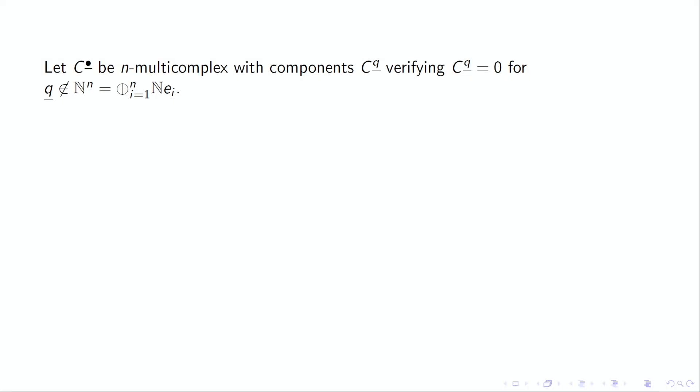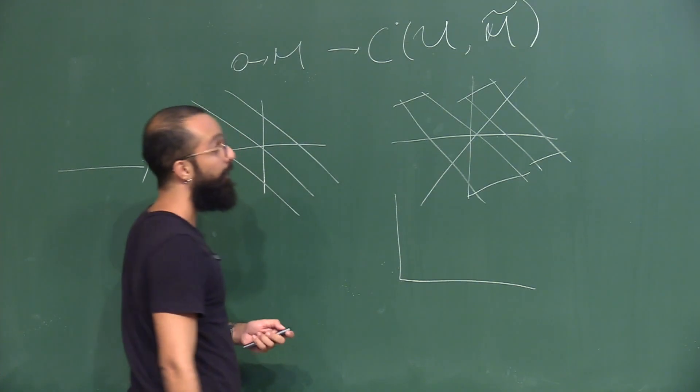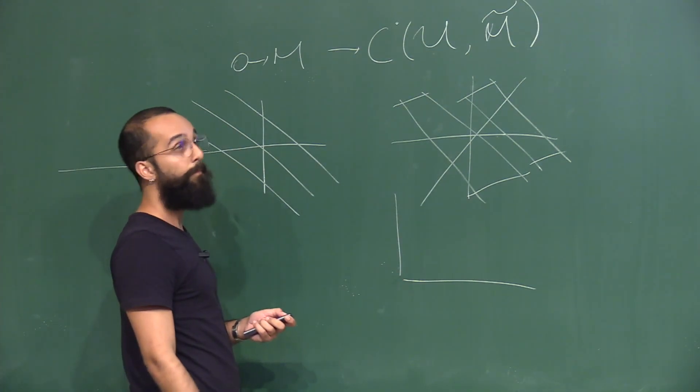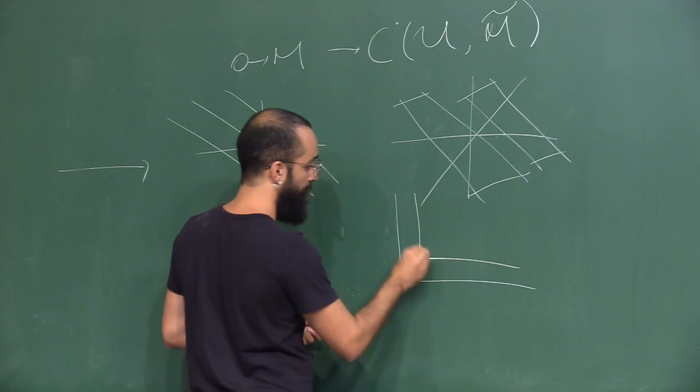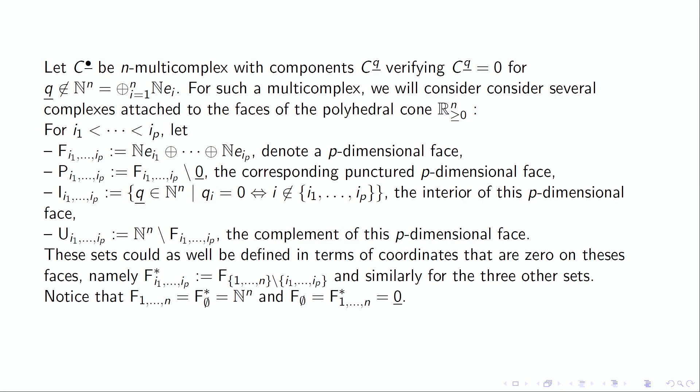Now please fix a multicomplex in the first quadrant or first octant. We'll consider several sub-multicomplexes of this one. For this we need to take some regions in R^n: a p-face, a punctured face where you remove the origin, the interior which is this region here, and the complement of the face - the exterior - which is everything here. We could also consider everything by taking zeros instead of the directions, which we denote F*.